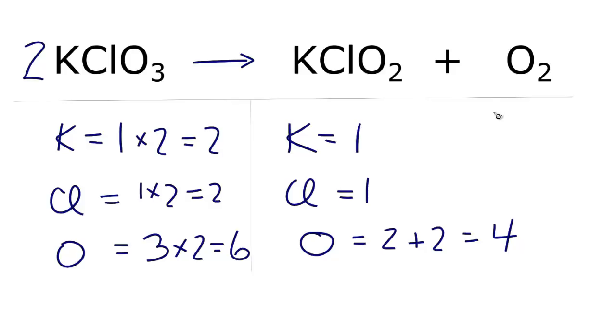Over here on the product side of the equation, so I have four oxygens and I have six here, why don't I put a two in front of the KClO2, and then we can update the oxygens.